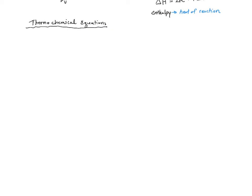The first thing we need to talk about has to do with balancing thermochemical equations. When balancing regular equations, we are only allowed to use whole number ratios — that's not necessarily the case with thermochemical equations. Let's consider, for example, the production of water from its two constituent elements: H2 in the gas phase plus O2 in the gas phase reacting to produce liquid water. Previously when we tried to balance an equation like this, we would have wound up with this result.